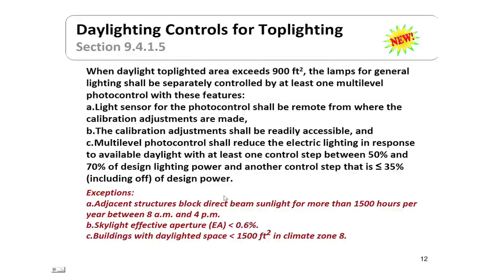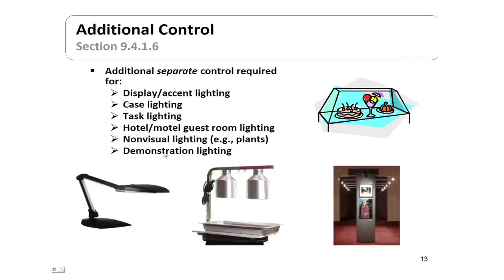Exceptions for top lighting controls include where adjacent structures block direct beam sunlight for more than 1,500 hours per year between 8 a.m. and 4 p.m., where the skylight effective aperture is less than 0.6%, or for buildings with daylighted space less than 1,500 square feet in climate zone 8 — certainly not applicable in Texas.